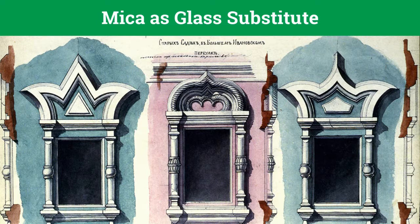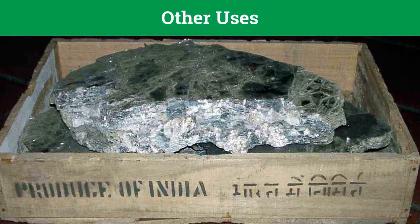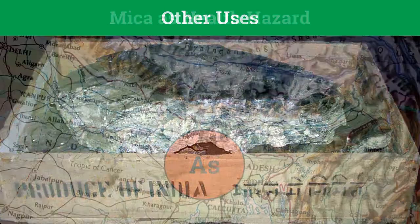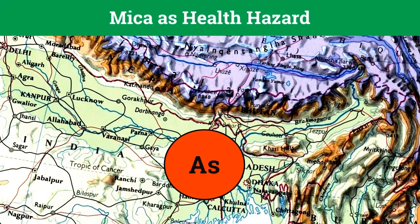Muscovite was also used as a glass substitute in old Russian churches, and these thick glass windows were called muscovy glass — it is from here that muscovite derived its name. Mica has numerous other applications: it is used in wallpapers for its shiny luster, in sparkles for toothpaste, and in fireproof materials. India is the largest supplier of muscovite mica in the world, and mica is also of concern in medical geology.